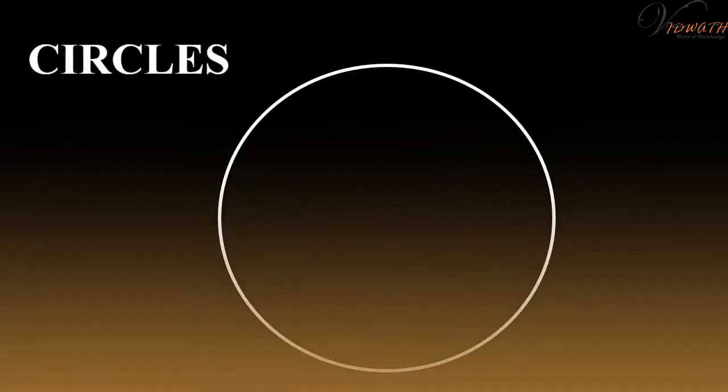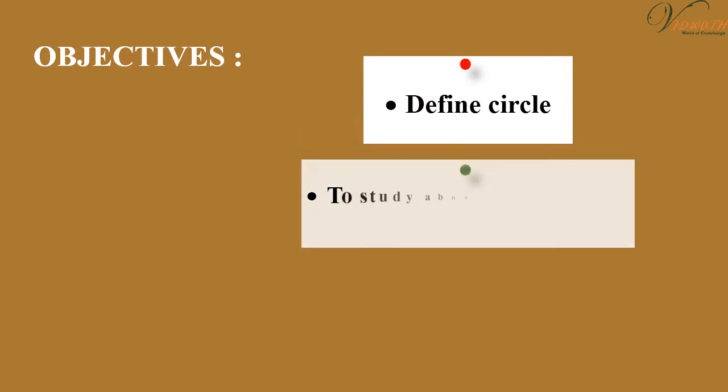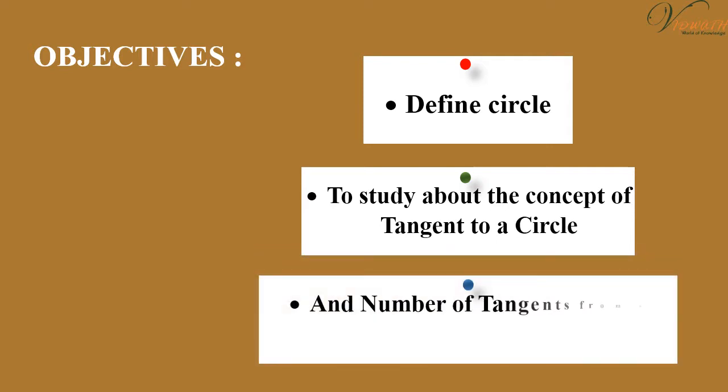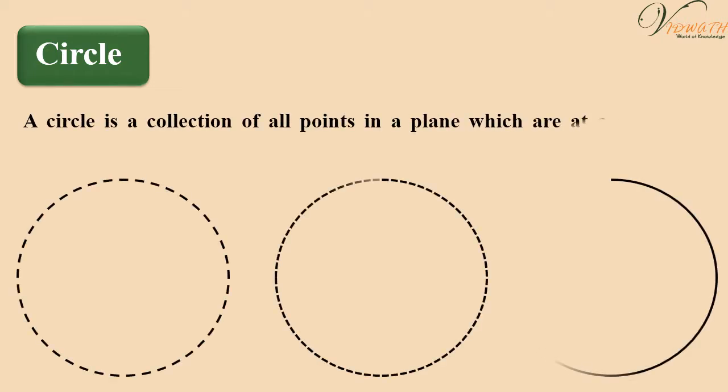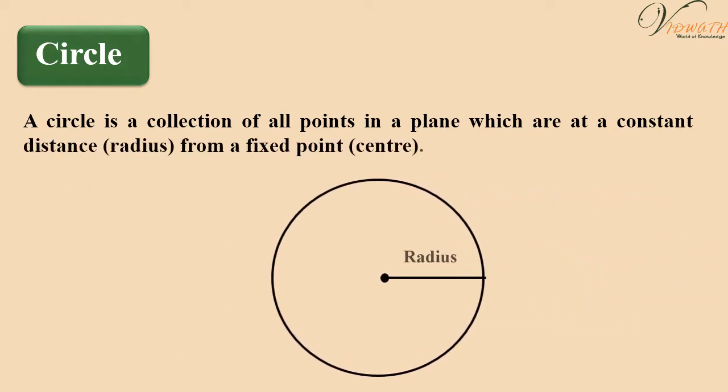Circles. Objectives: Define circle. To study about the concept of tangent to a circle and number of tangents from a point on a circle. A circle is a collection of all points in a plane which are at a constant distance radius from a fixed point center.